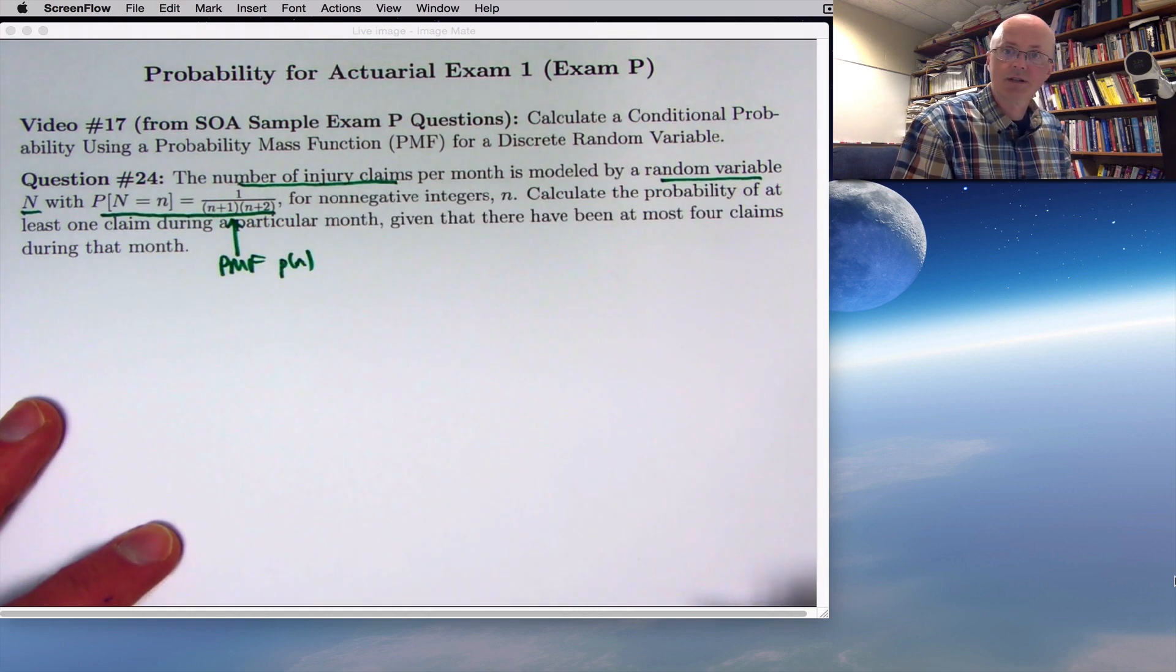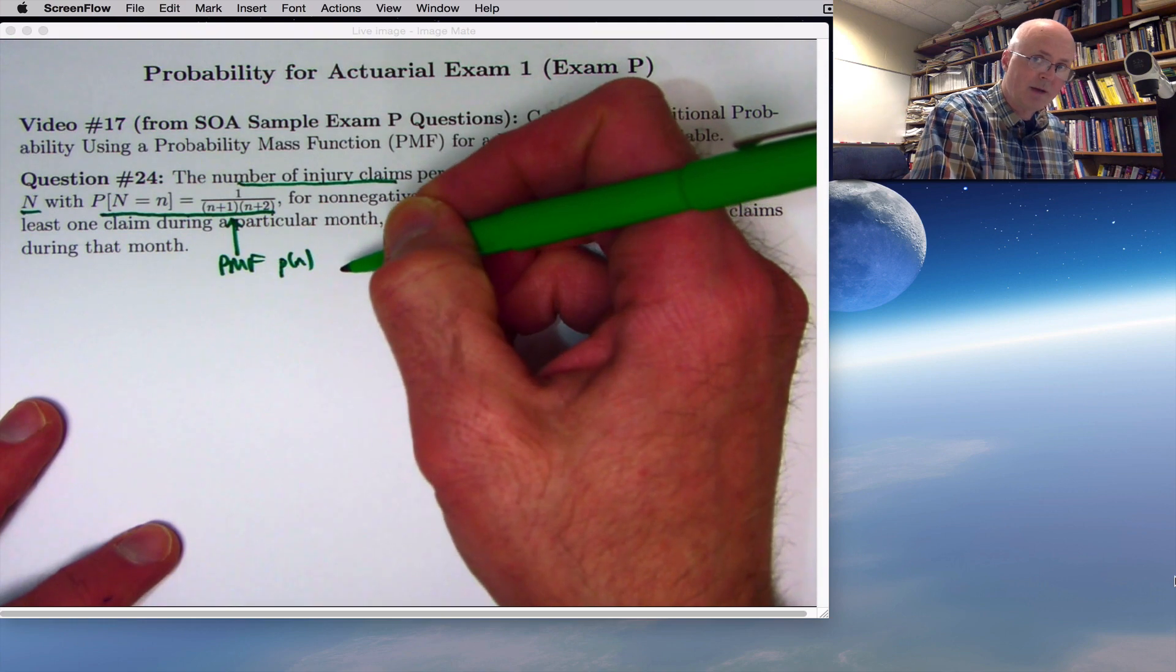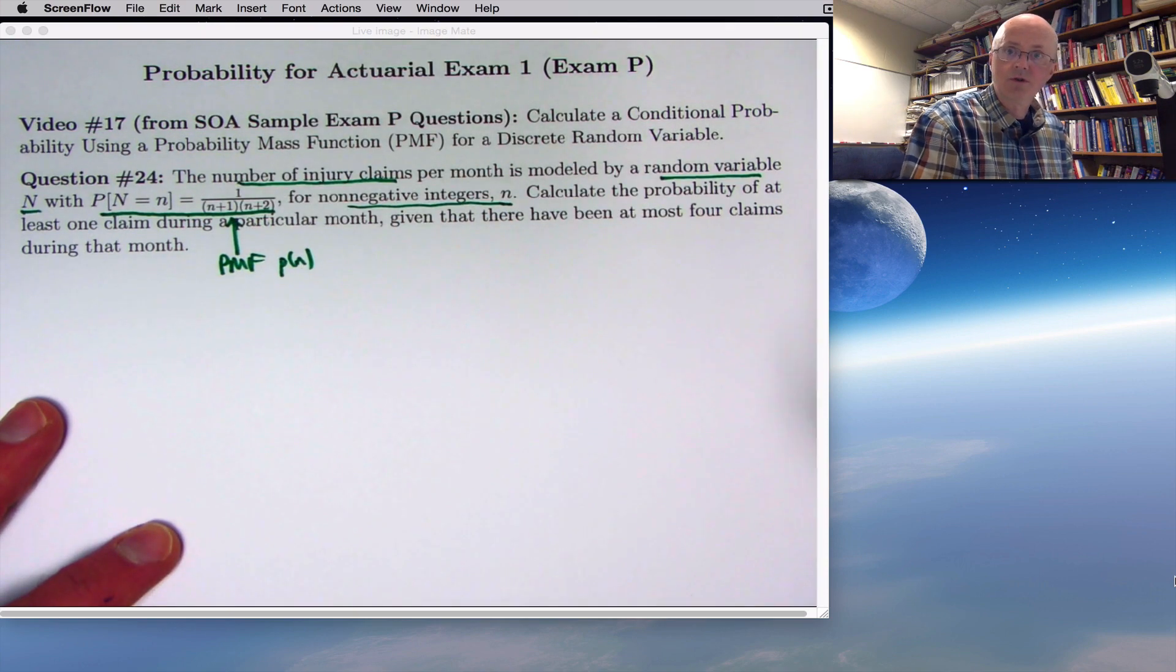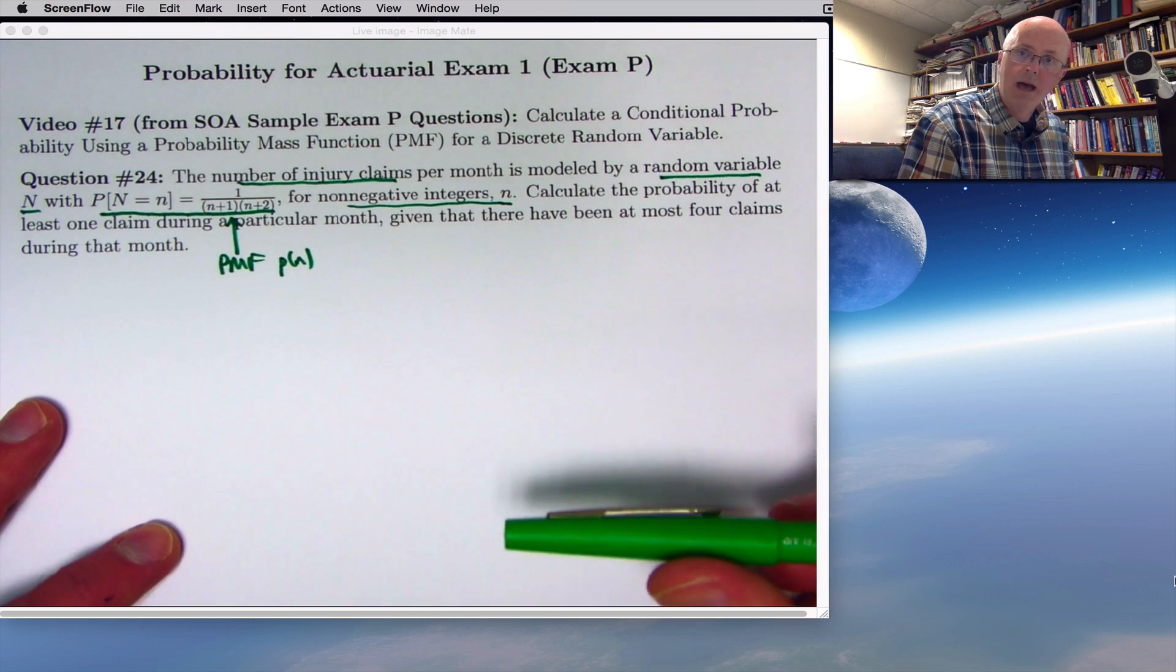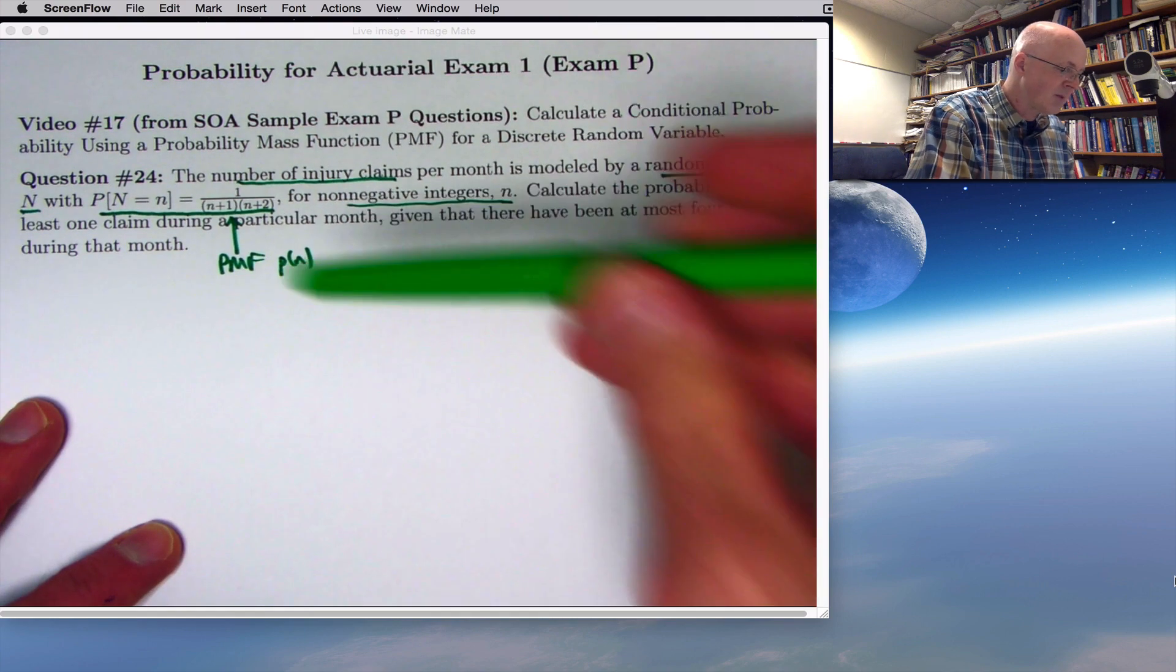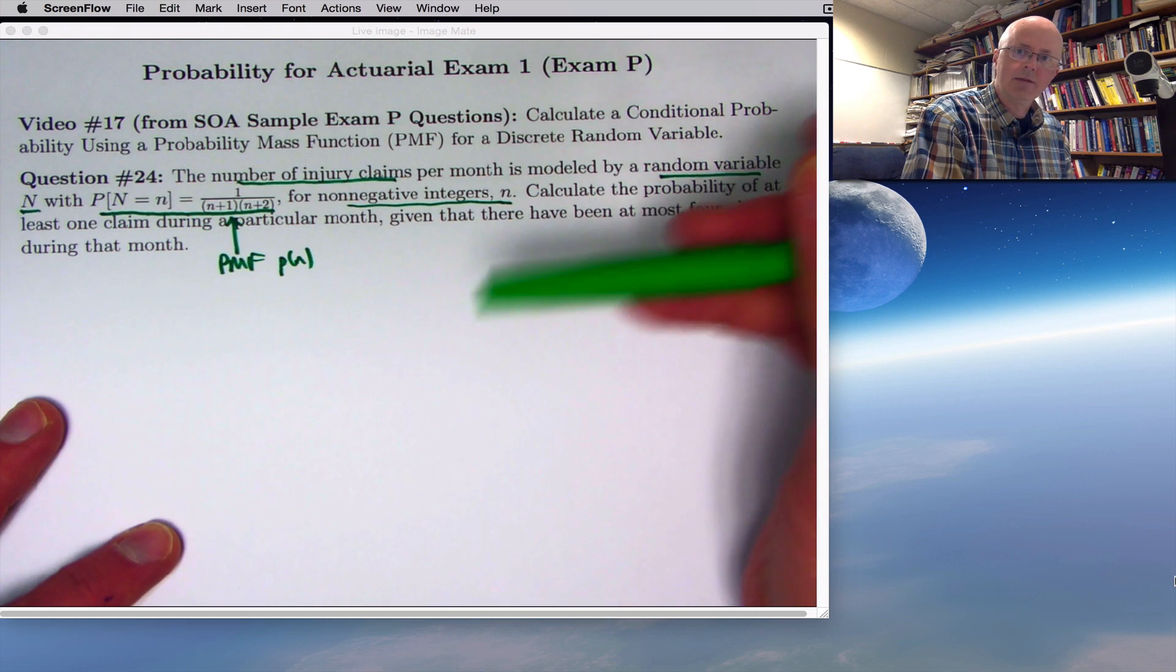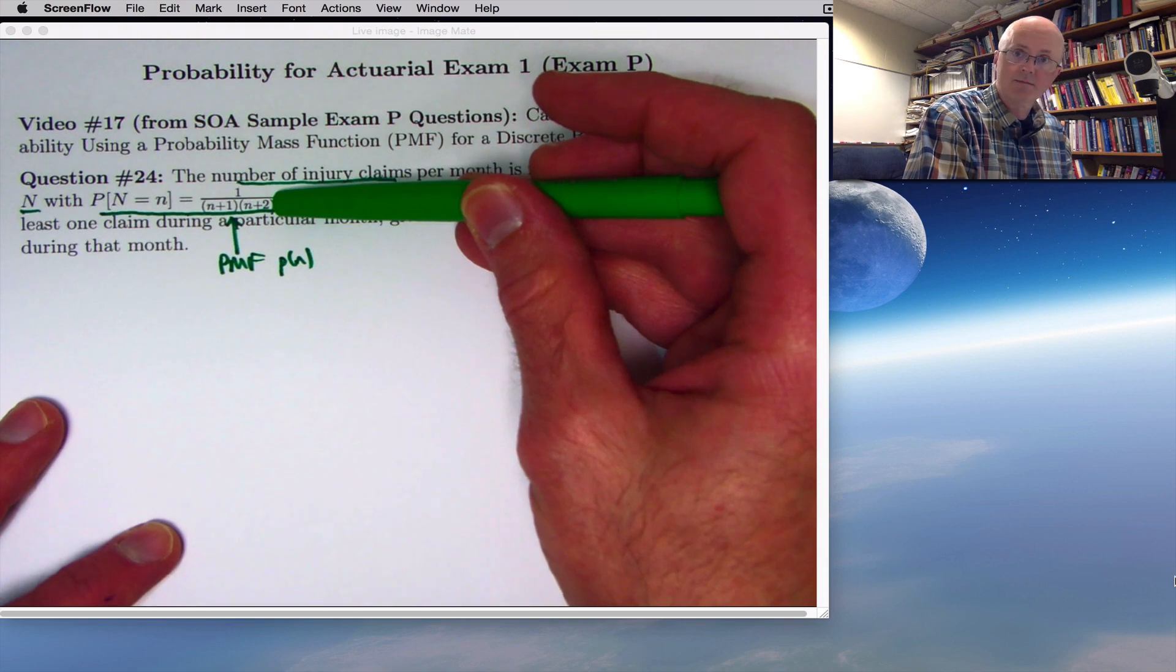Little p here represents the function name. It's a function of little n, not capital N. You want to think, conceptually, of little n as being different values, in this case non-negative integers: 0, 1, 2, 3, etc. This is a function of little n that gives you probabilities for capital N. The probability that capital N equals 0, for example, is found by plugging in little n equals 0 into here, giving you 1 half. The probability that capital N equals 1, that there's one injury claim in a given month, is found by plugging in little n equals 1 into this formula, which would give you 1 sixth.